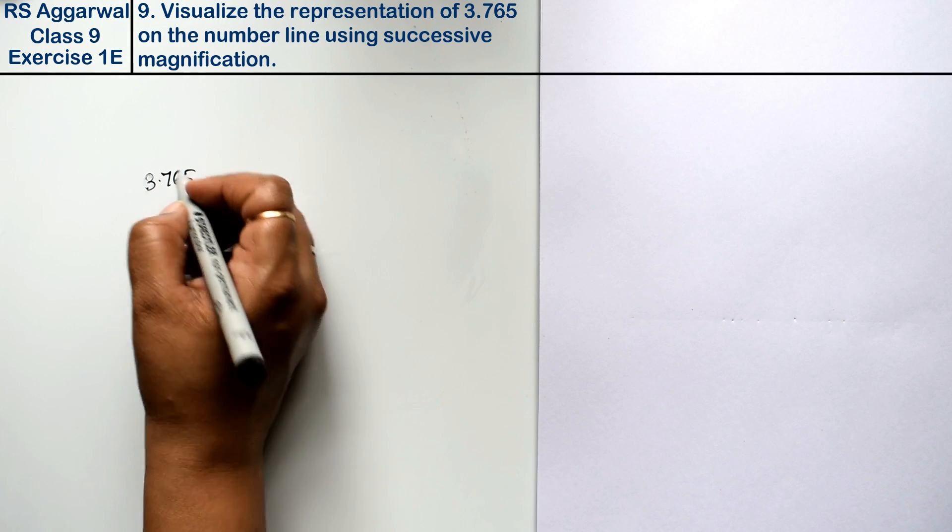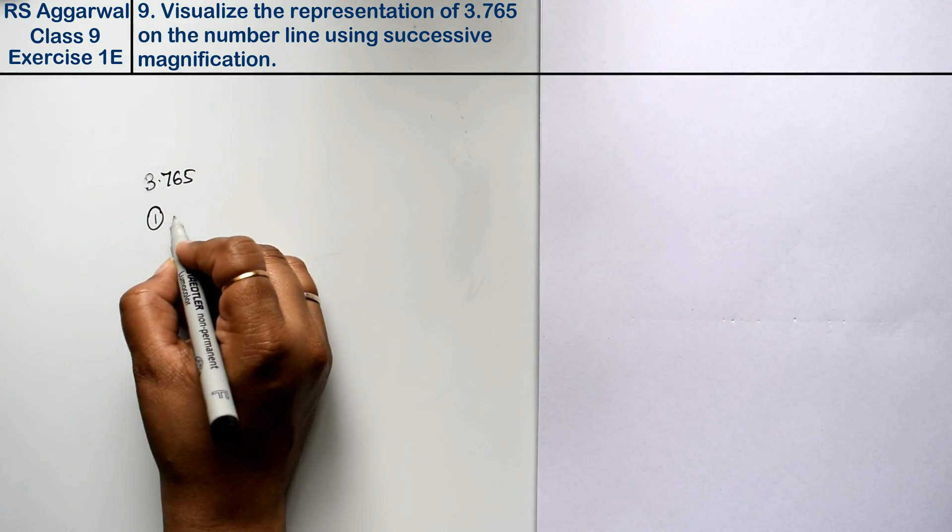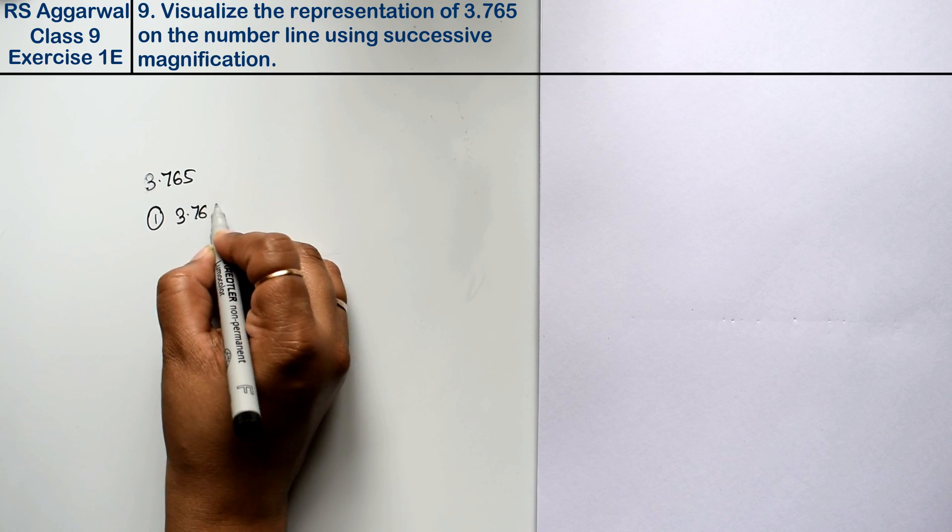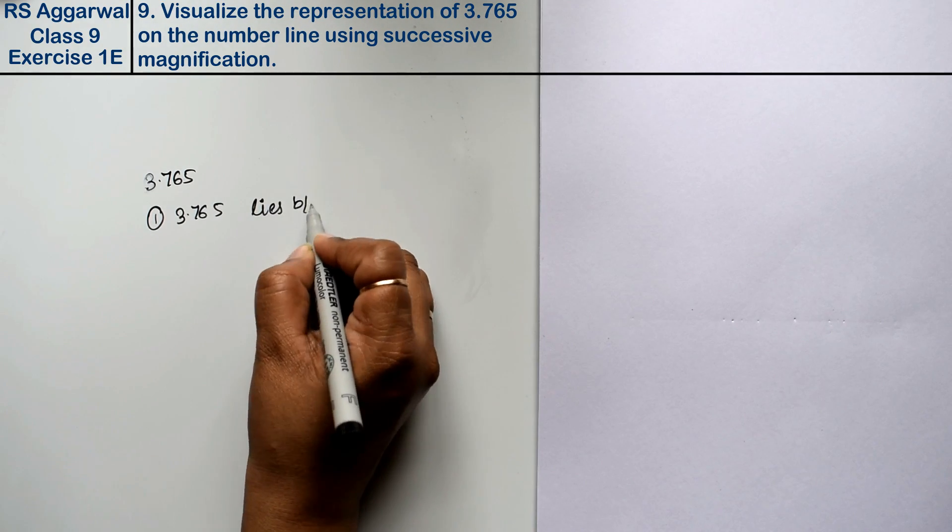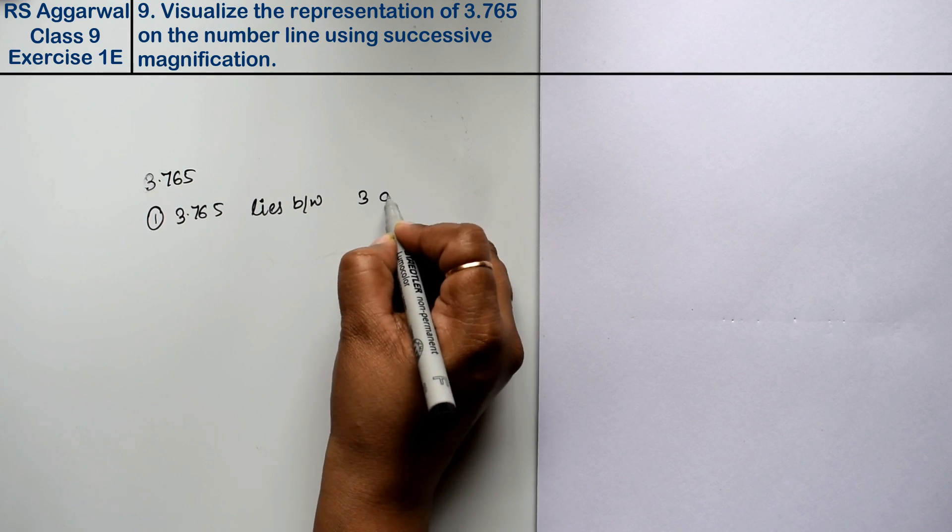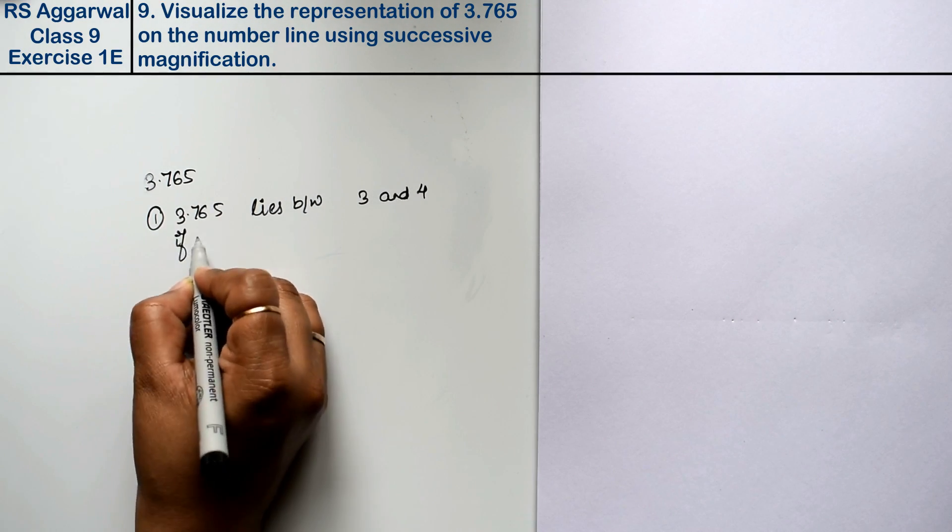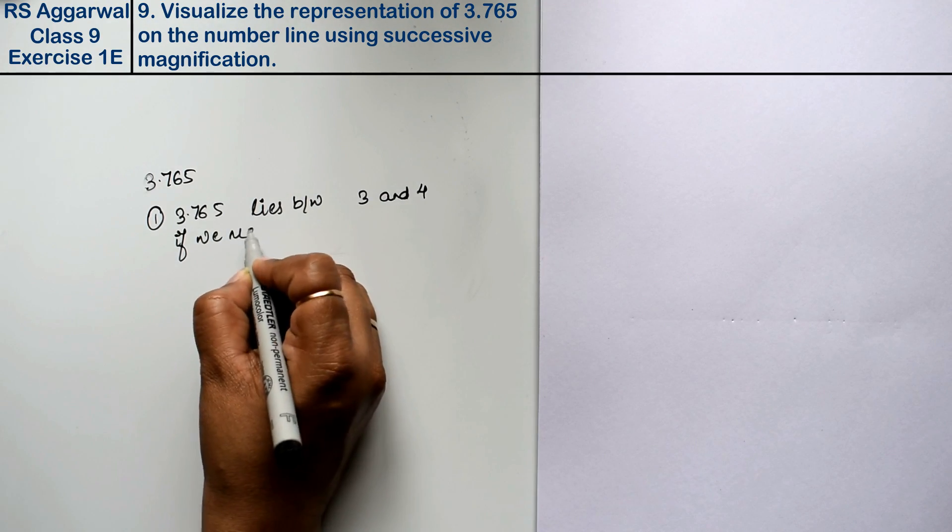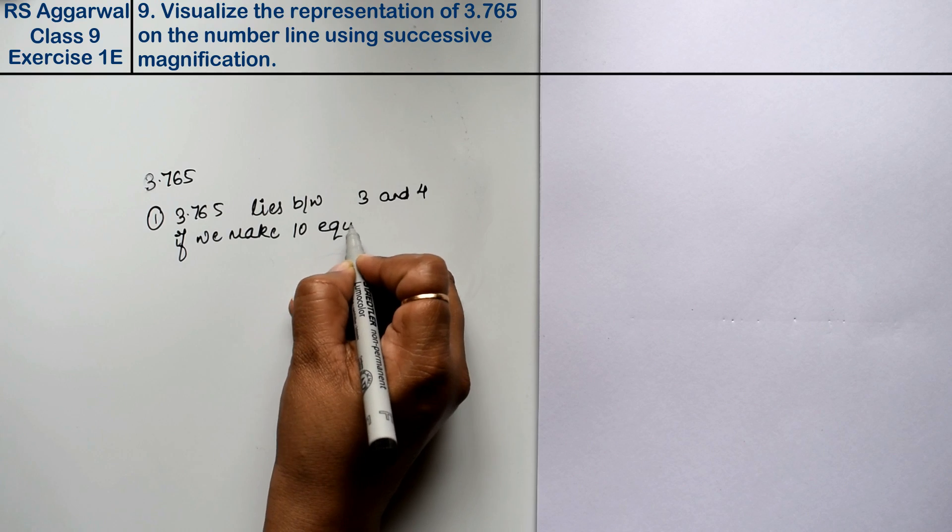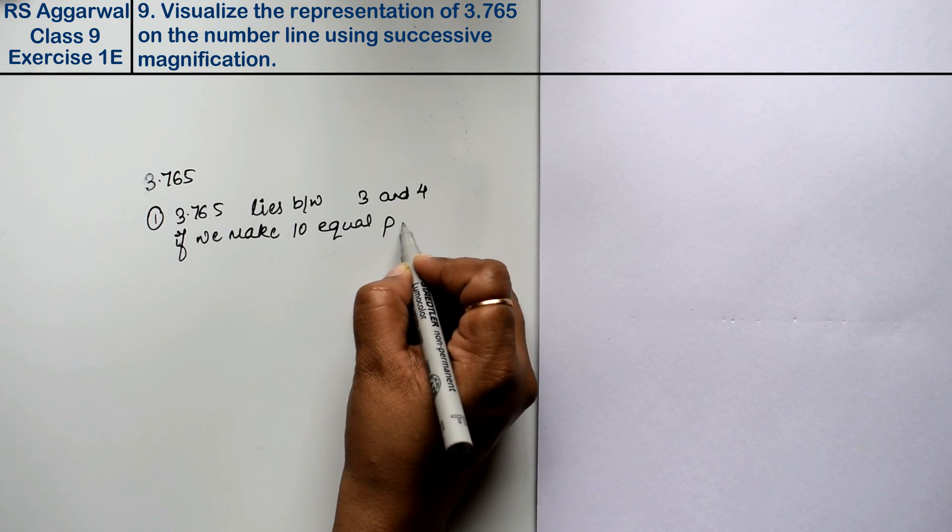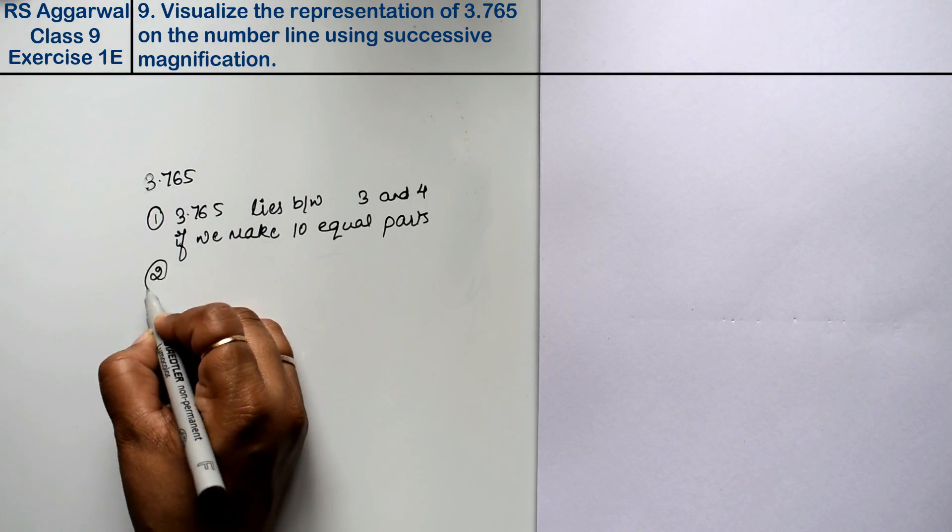Friends, see where will this number lie? Let's see if 3.765 lies between 3 and 4, but where will it lie if we make 10 equal parts? Right friends, magnifying visual parts means that it will take the exact point.